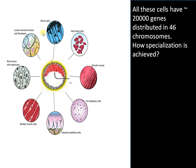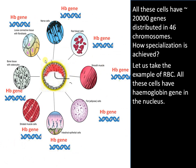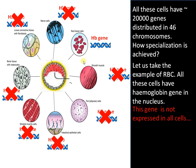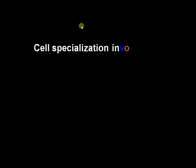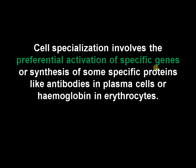Then what contributes to this difference? Let's take the example of RBCs. All these cells have the hemoglobin gene present in the nucleus, but this gene is not expressed in all cells — it is expressed only in erythrocytes. So the hemoglobin gene functions in erythrocytes for oxygen transport, and gene expression is based on function; a gene is expressed only when and where it is needed. Cell specialization involves the preferential activation of specific genes, or the synthesis of specific proteins like antibodies in plasma cells or hemoglobin in erythrocytes.